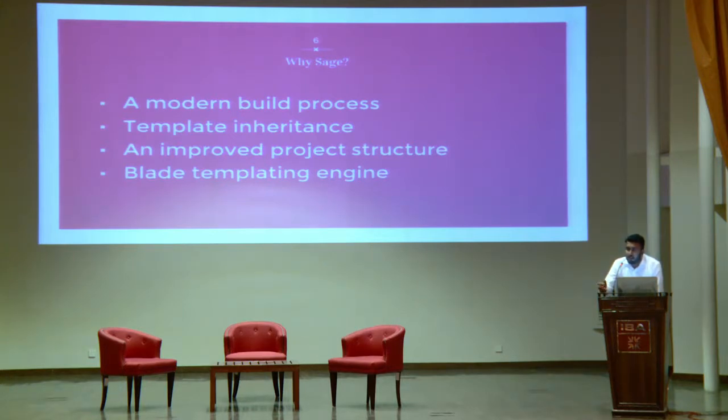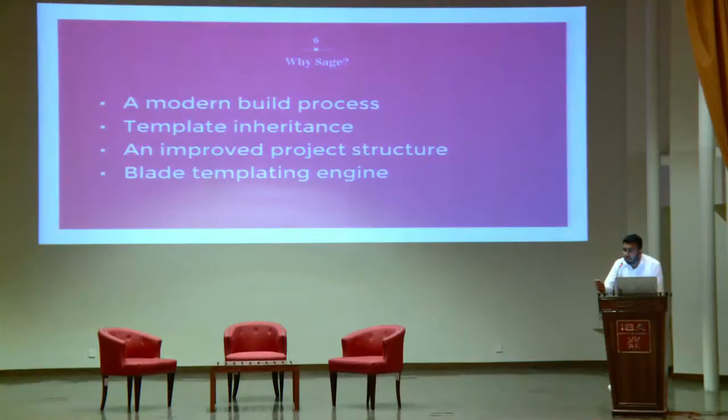The major release is now Sage 9, introduced in February 2018. What's new in Sage 9? They introduced Laravel's Blade engine as a templating engine and a better file structure. They replaced Gulp with Webpack, which lets you compile your Sass files to CSS, convert ES6 JavaScript to JavaScript with Babel, and optimize images as well. That covers the modern build process.